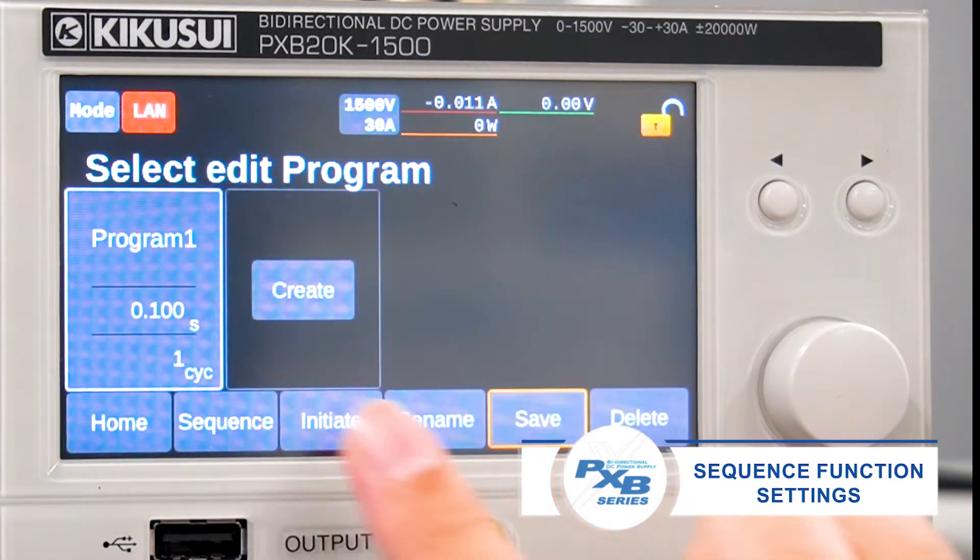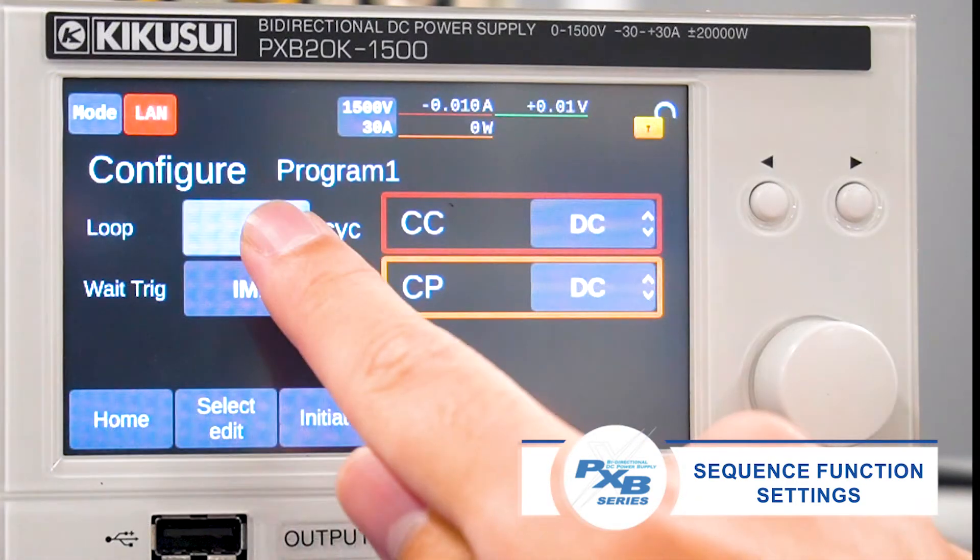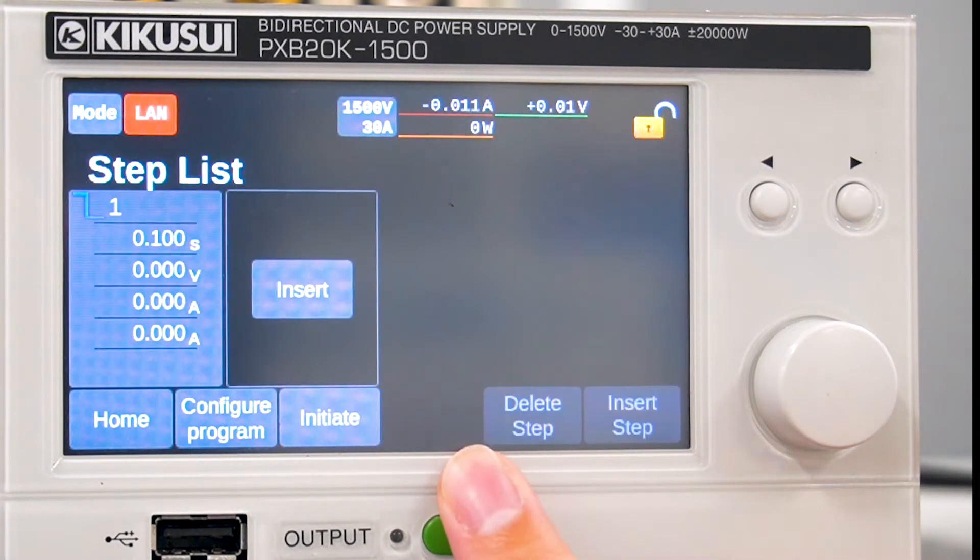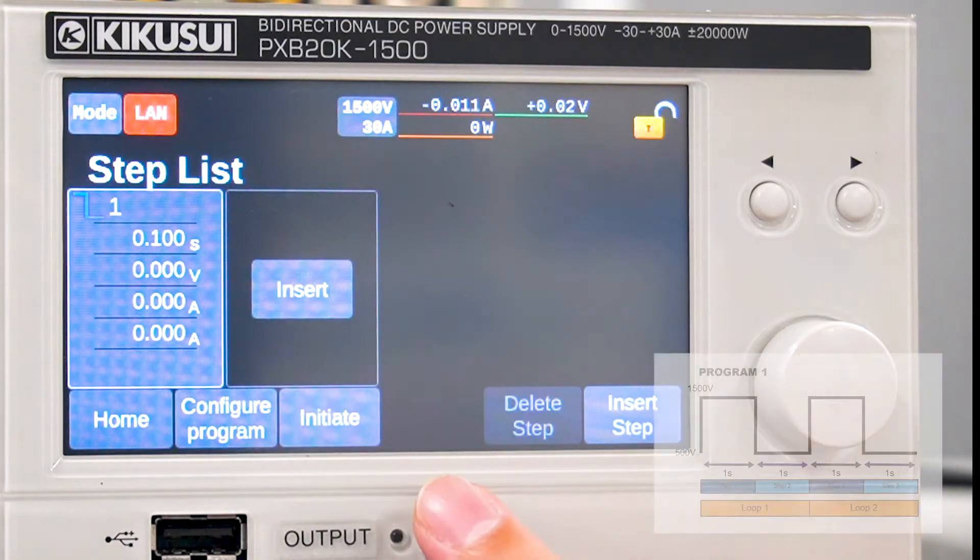Next, press create to create a program. Press program 1 to move to the program settings. Change the number of loops to 30 and press step list to edit step 1.